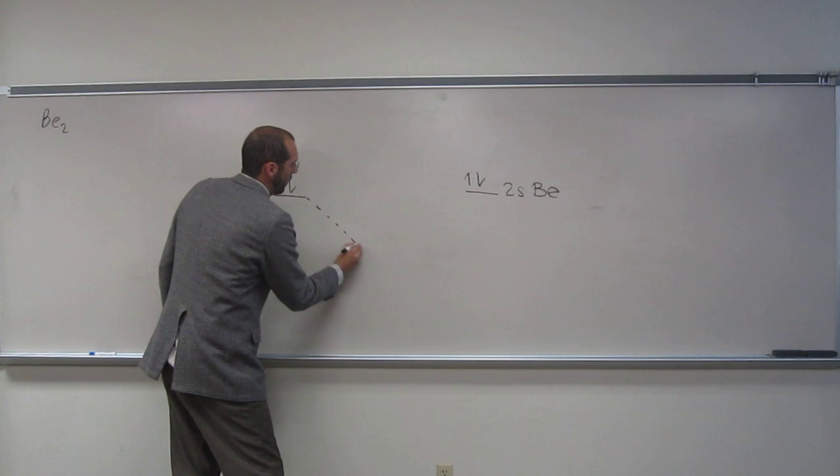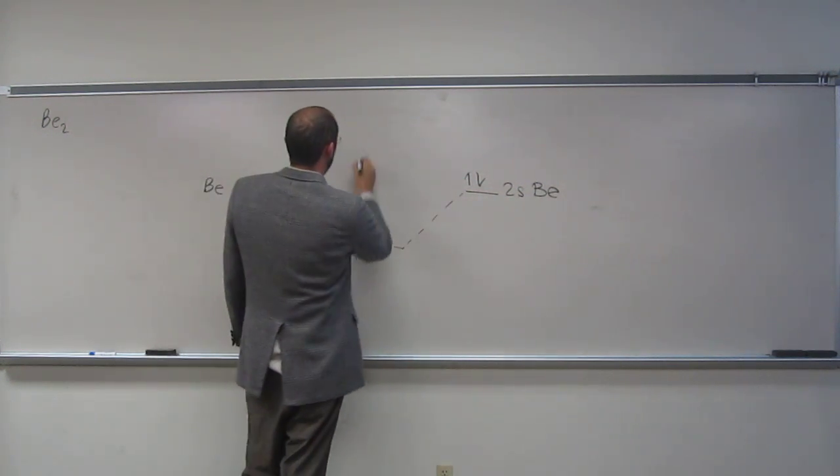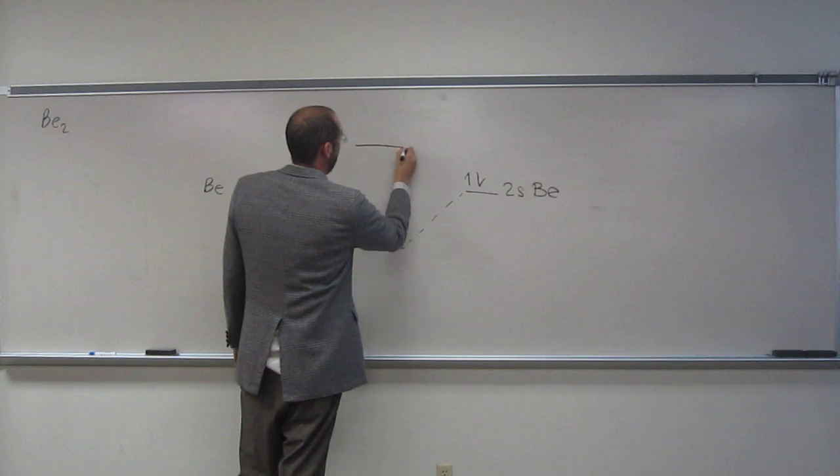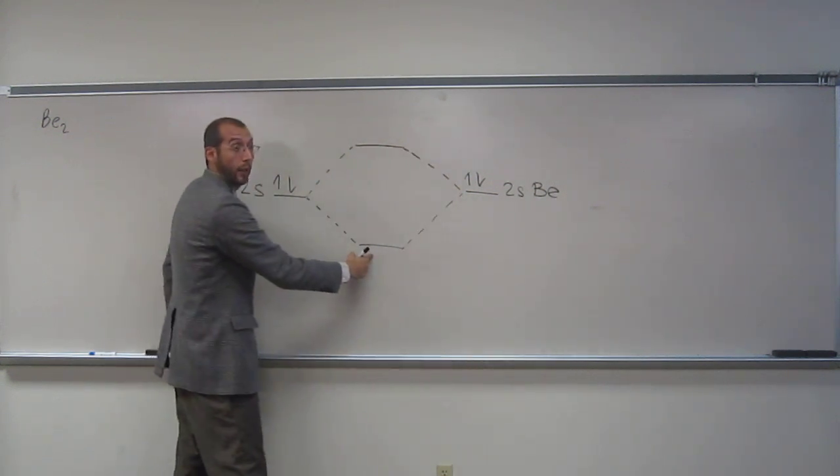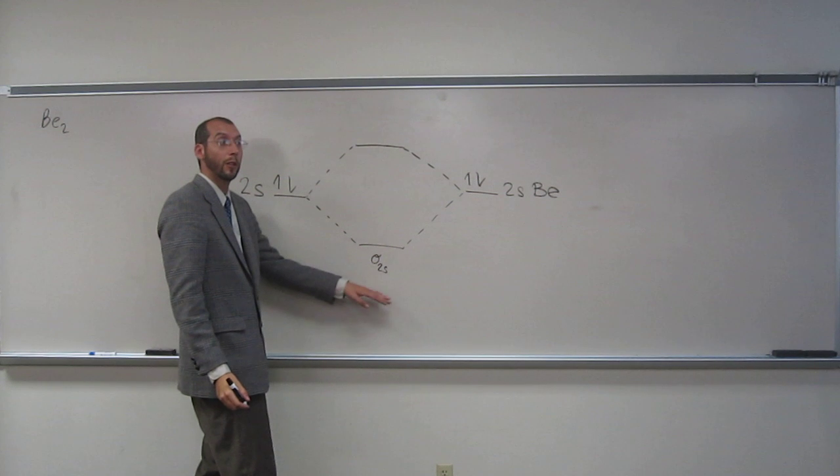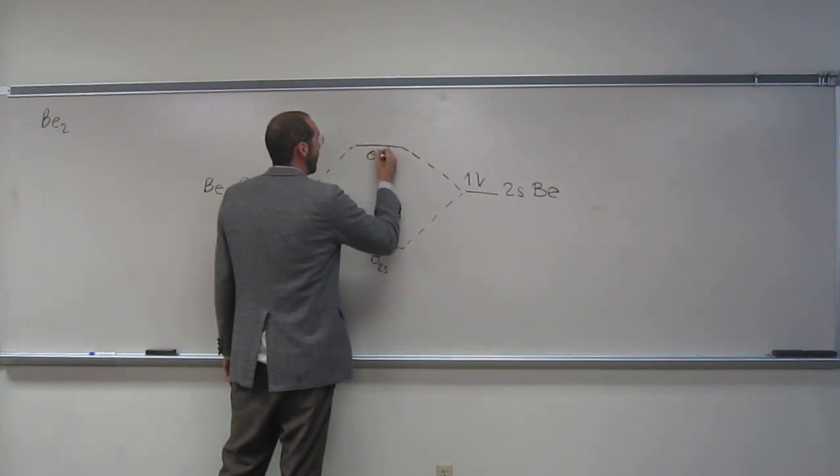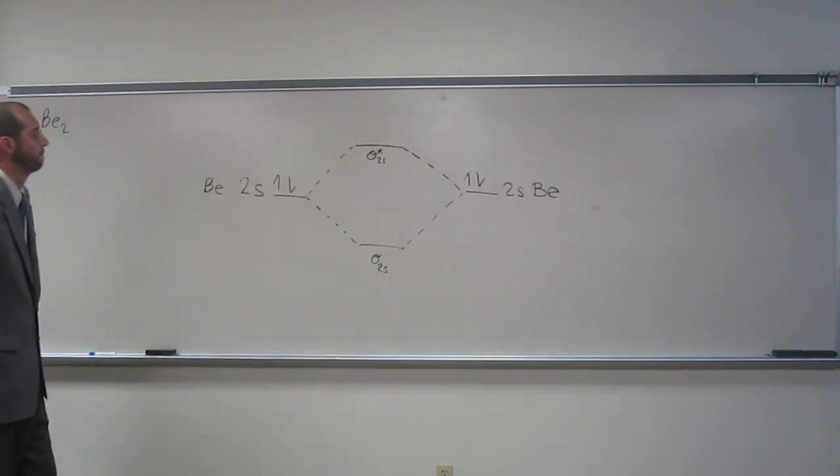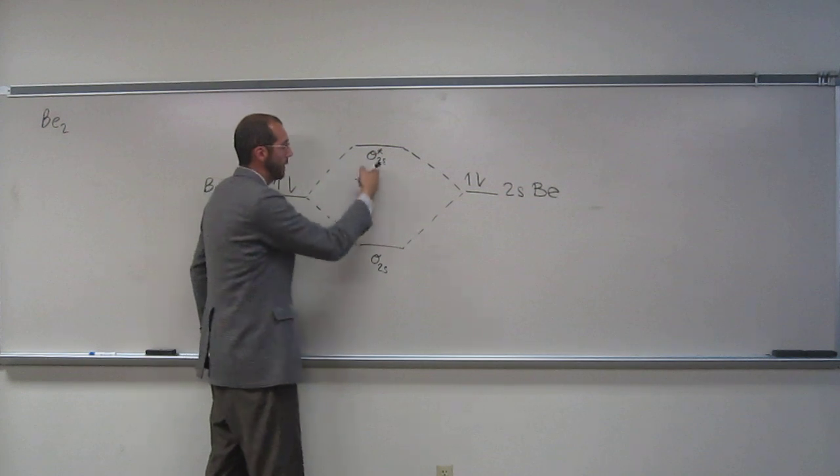So what do we do now? Write the bonding orbital. Write the anti-bonding orbital. So this one here, what do you think it's going to be called? Sigma 2S. And this one's going to be called sigma star 2S. And this, so like we said, this is bonding, this is the anti-bonding.